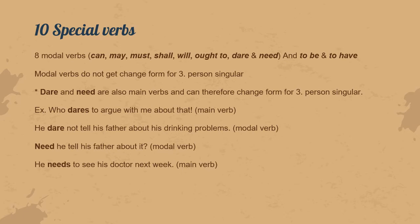Modal verbs do not change their form for third-person singular. For example, 'who dares to argue with me about that' — here 'dare' gets an -s because it is used as a main verb. But in 'he dare not tell his father about his drinking problems', 'dare' is a modal verb and therefore doesn't get changed. 'He need not tell his father about it' — here 'need' is a modal verb and doesn't get an -s. But 'he needs to see his daughter next week' — here 'need' is a main verb and gets an -s.